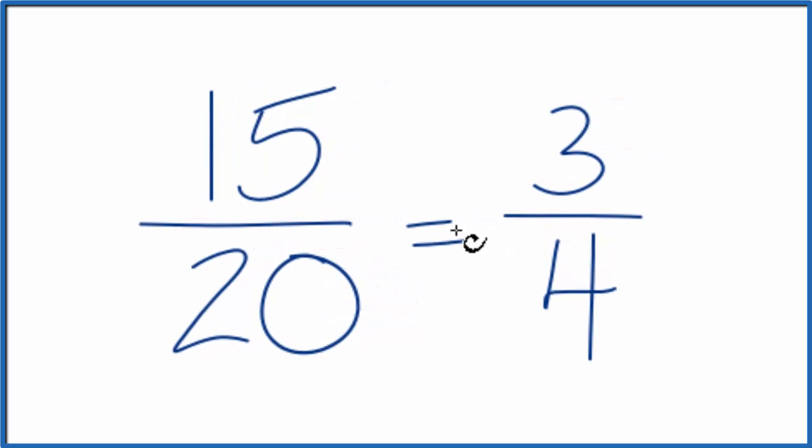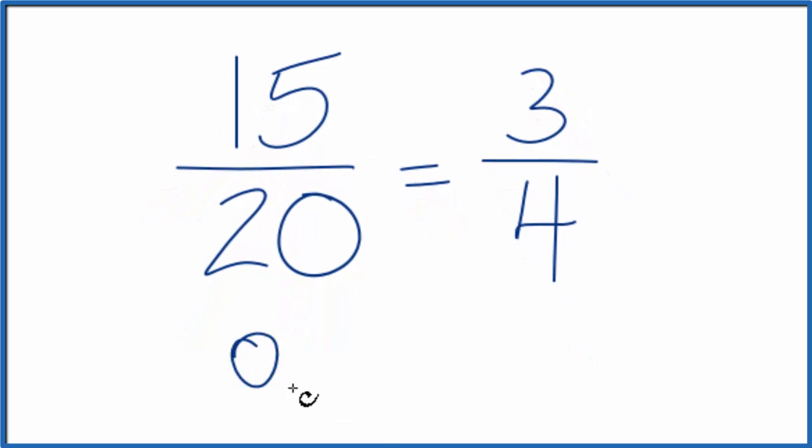So we've simplified or reduced 15 20ths to 3 4ths. If you divide 15 by 20, you'll get 0.75. If you divide 3 by 4, 0.75 because they're equivalent fractions. They have the same value.